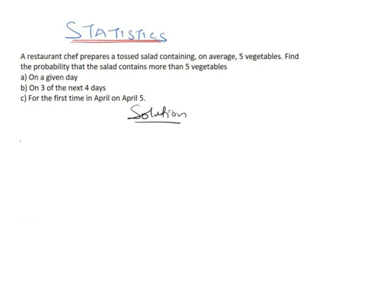For part C of the question, we are told to find for the first time in April on April 5th the probability that the salad contains more than five vegetables. So here, 'first time' gives us an idea that this is a geometric distribution, because it's a probability distribution when the first success occurs in a given number of trials.